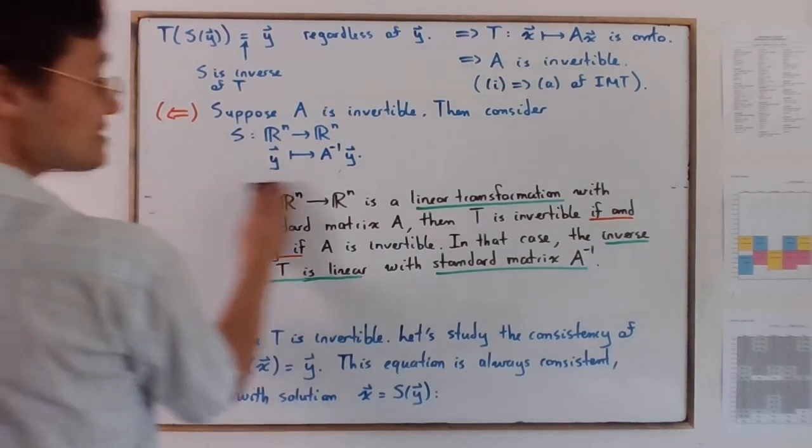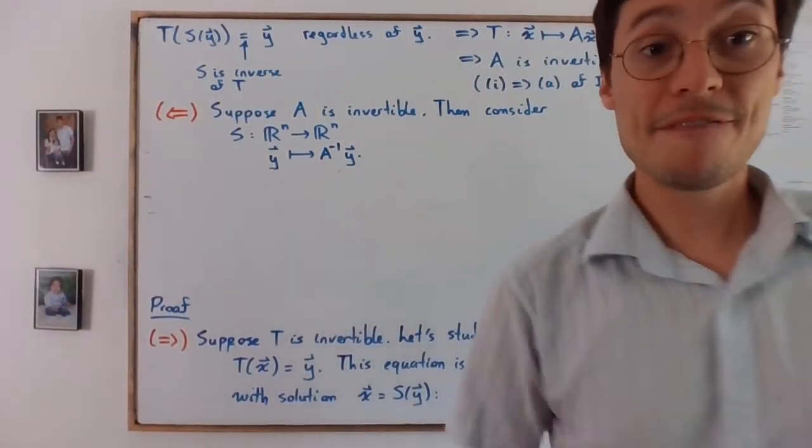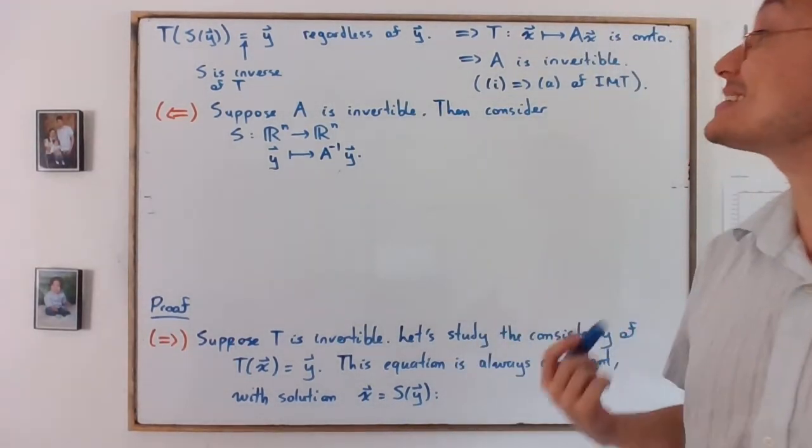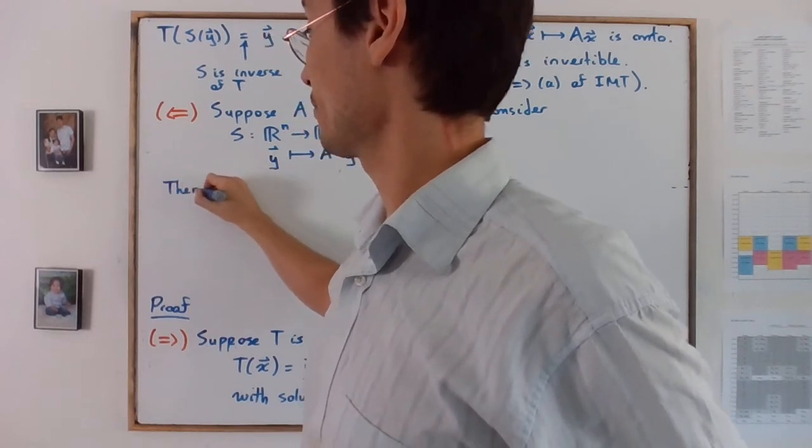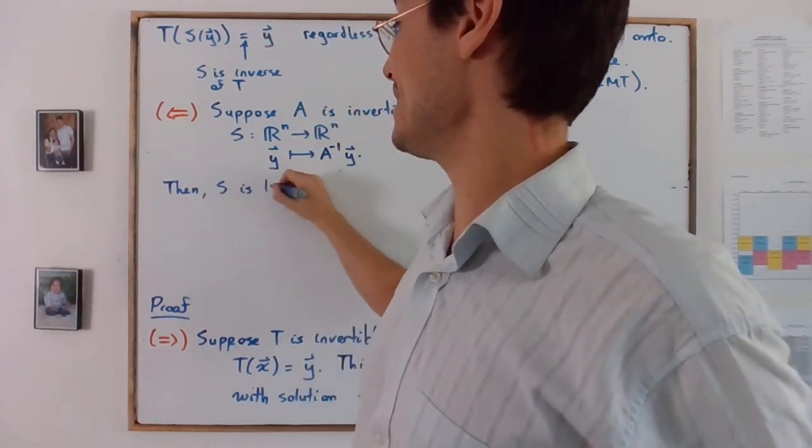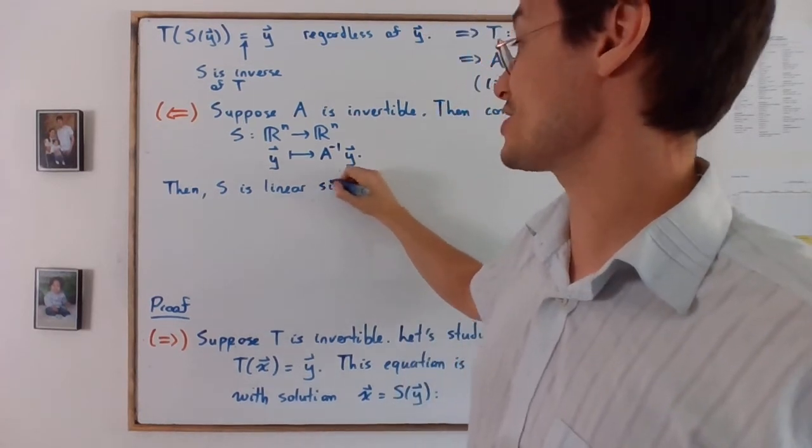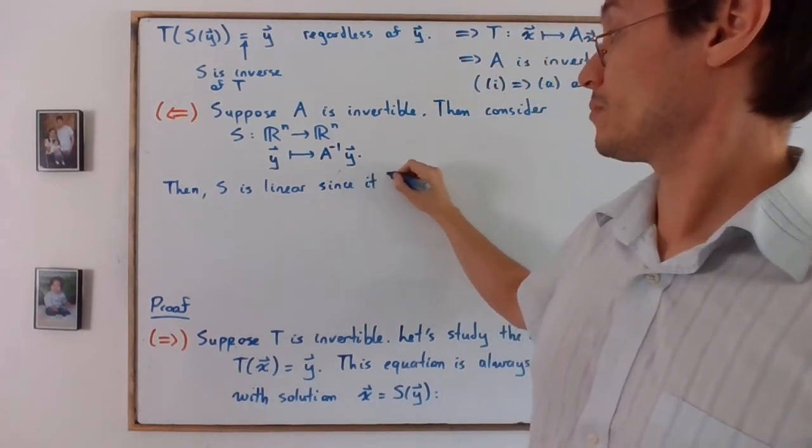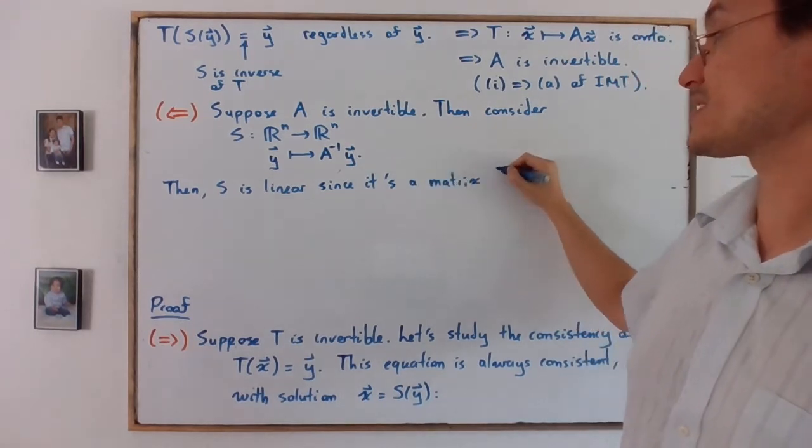So then what does it mean? First it means that S is linear, since it's a matrix transformation.